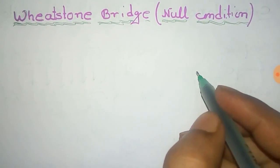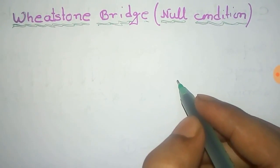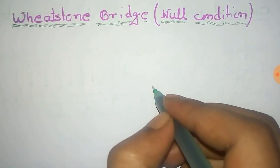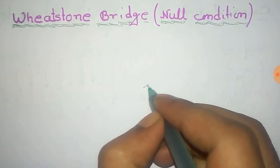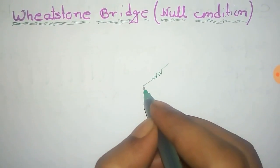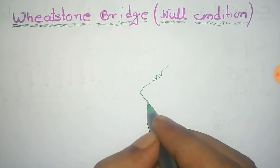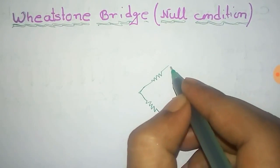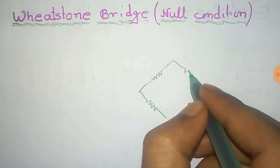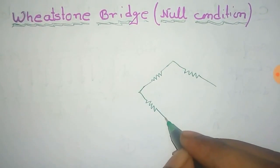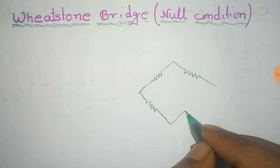In this video you will find the null condition in Wheatstone bridge network. So first of all, draw the Wheatstone bridge. It has four arms and each arm has a linear resistance, so there are total four resistances.